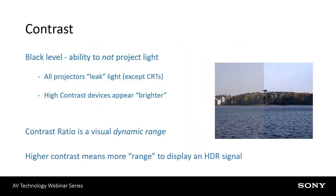Contrast is probably, from a specification point of view, the most confusing — and probably the most abused — specification, because there are so many ways to measure it and so many things that affect it. It's very hard for a manufacturer to put out specifications that tell the whole story. Contrast ratio, in a nutshell, is the ability of the projector not to project light. It's a ratio of how dark the projector can be versus how bright it can be. All projectors — with the exception of old CRT projectors — leak light in black. If you turn the projector on and feed it a full black signal, you'll still see a very dark gray area from light leaking through the optics.